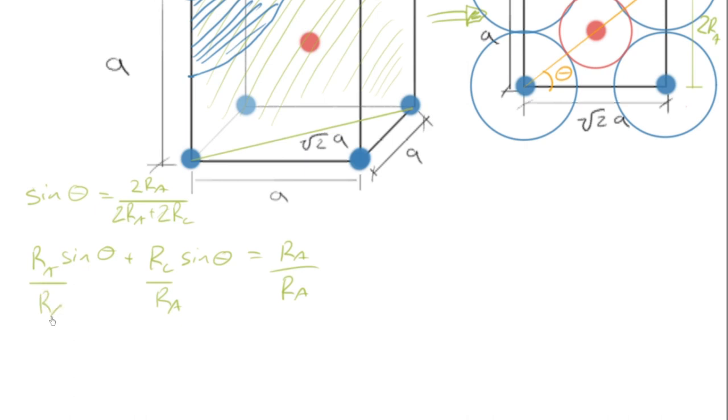And then we'll just take both sides and divide by RA. And we find that that becomes one, as does this. And so we have this nice result, as we did for the octahedral site.